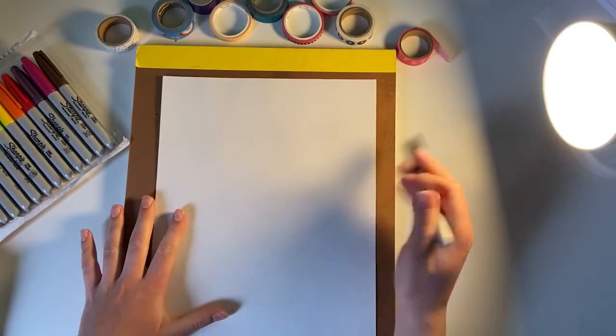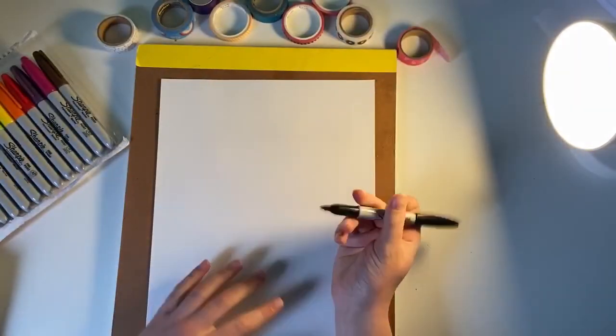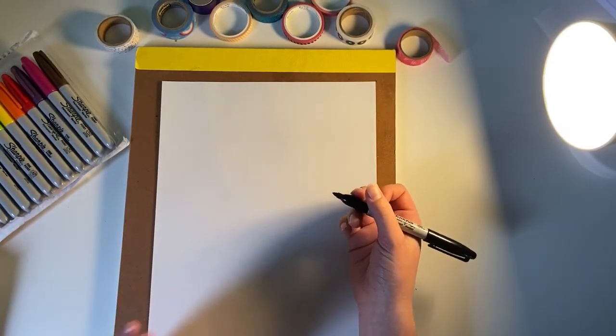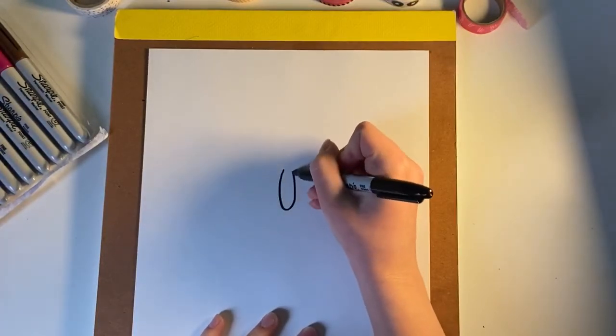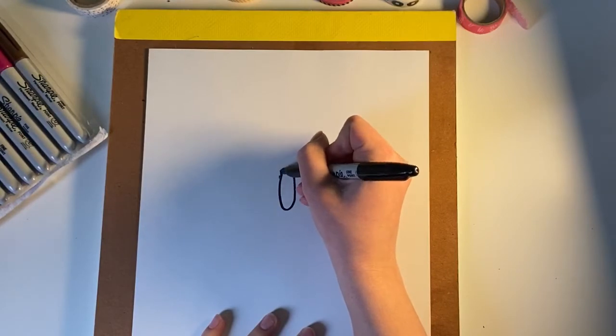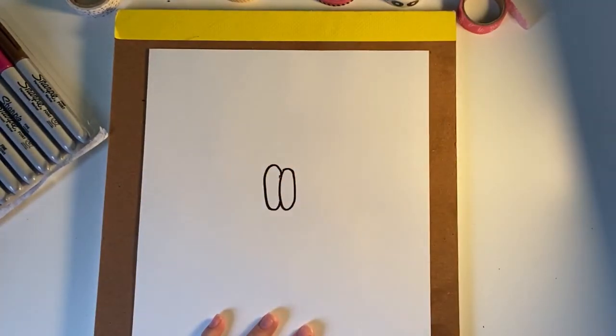Make sure your piece of paper is facing this way. All right, here we go. So I'm going to start out by drawing two ovals for the eyes, so one right here and another one right next to it.